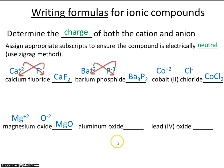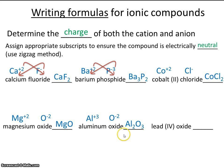Let's do aluminum oxide. Aluminum has a charge of plus 3, and oxide has a charge of minus 2. So when we cross them using the zigzag method, it's written as Al2O3.